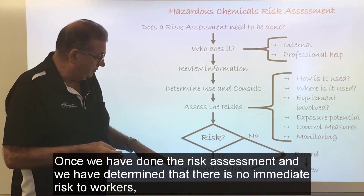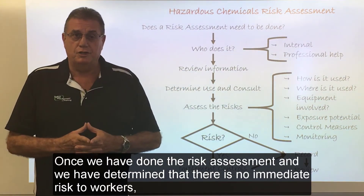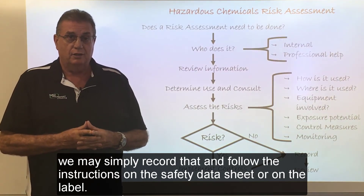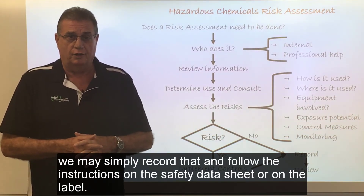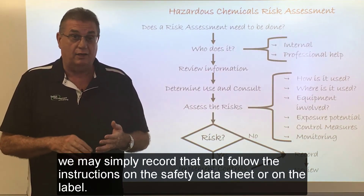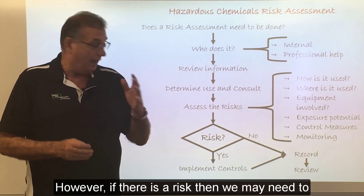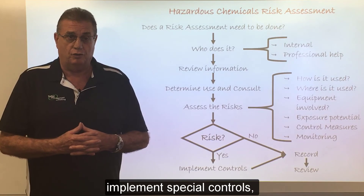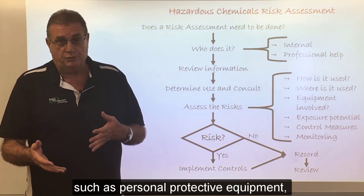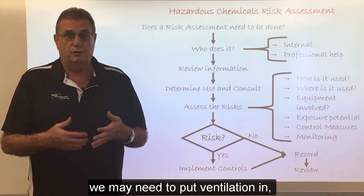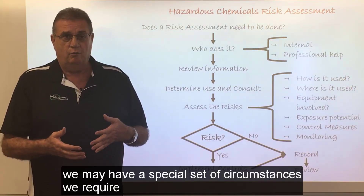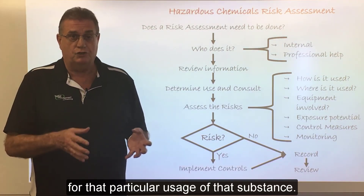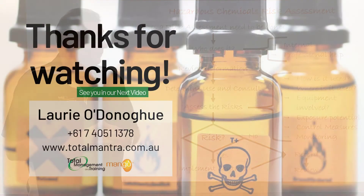Once we've done the risk assessment and determined there is no immediate risk to workers, we may simply record that and follow the instructions on the safety data sheet or on the label. However, if there is a risk, we may need to implement special controls such as personal protective equipment, ventilation, or a special set of circumstances required for that particular usage of that substance.